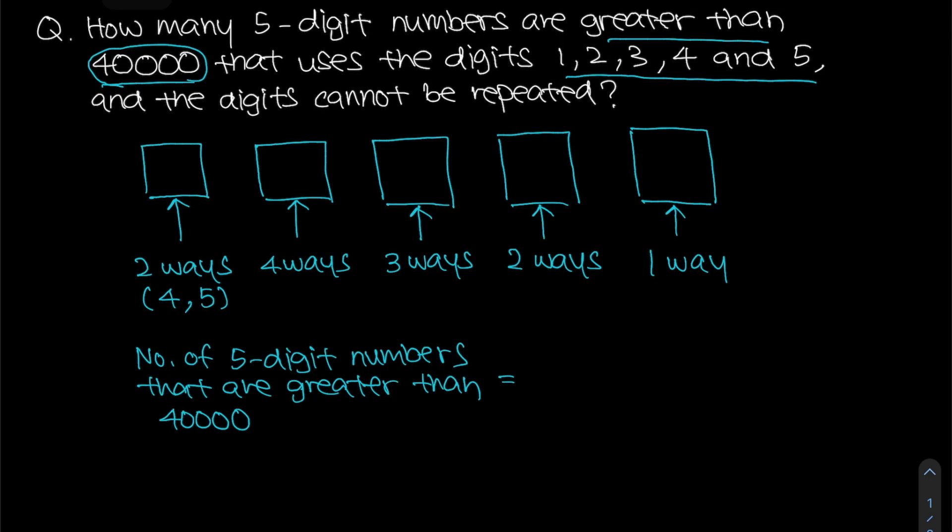How do we find that? We simply need to take 2 times 4 times 3 times 2 times 1. Why do we multiply them? It is because they are in the same scenario, so we just need to do a simple multiplication to find the total number of 5-digit numbers that are greater than 40,000.